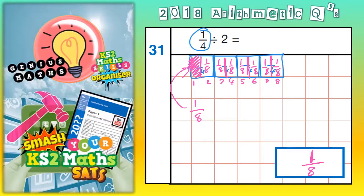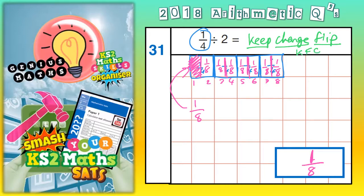However, there's another method that will always work as well. It's called the Keep Change Flip method. There are videos on YouTube — if you type in 'dividing fractions keep change flip' you can watch them. Some people have even made songs about this. Some people call it KFC, linking to the famous chicken shop, though it's technically KCF.